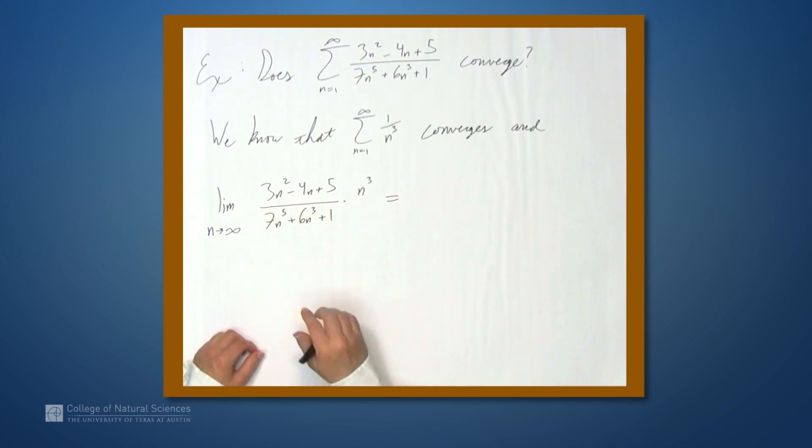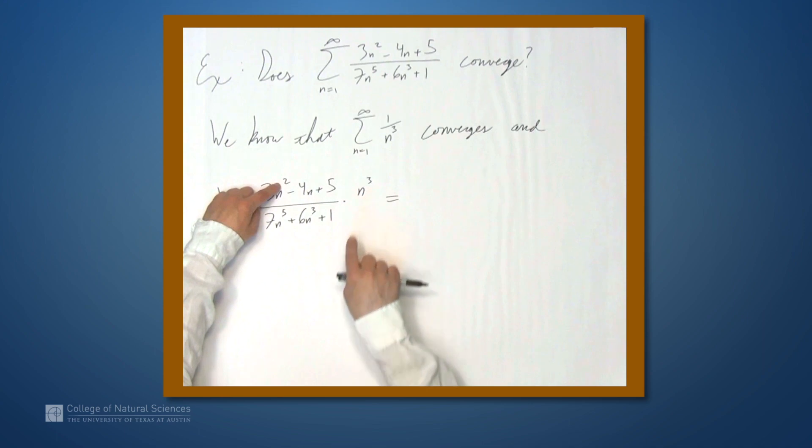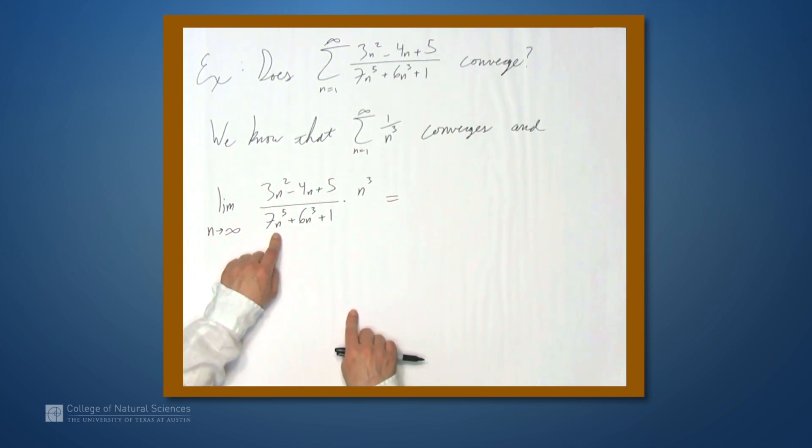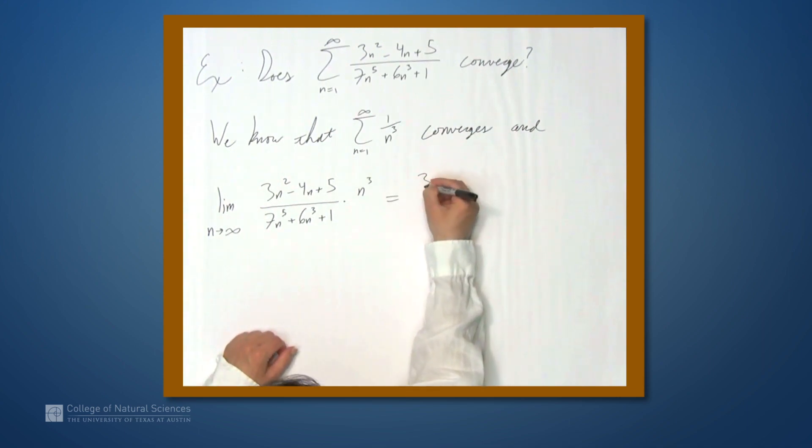What do we have in the numerator? We have 3n to the fifth minus some stuff plus some stuff, but it's the 3n to the fifth that determines the long term behavior. And in the denominator, we have 7n to the fifth. So remember, if we take a ratio of polynomial-like things, we're dealing with n, but the same behavior we see with x, we see here, too. So we have 3n to the fifth over 7n to the fifth. When the exponents are the same, we just take the ratio of the leading coefficients. So this limit is 3 sevenths.